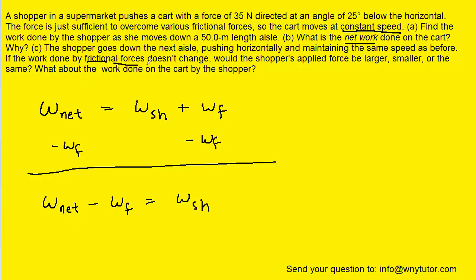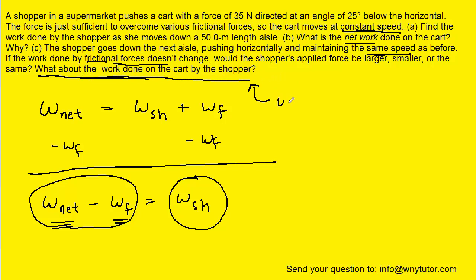The question notes that the frictional forces are not changing, so that means that WF is not changing either. And also, since the cart is maintaining the same speed, that means that the net work is not changing. Well, if neither of these two values is going to change, that means the work done by the shopper also will not change. So that will actually answer the second part of part C. When it asks what about the work done on the cart by the shopper, you can say that that remains unchanged.